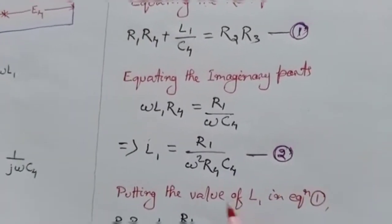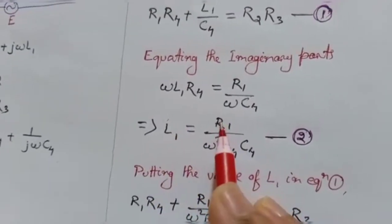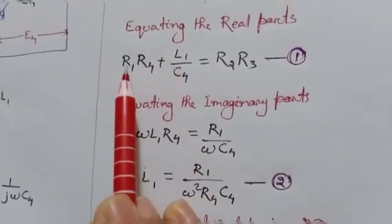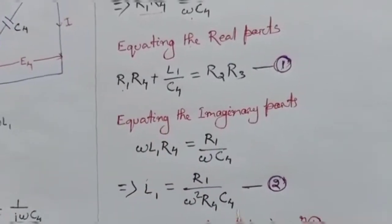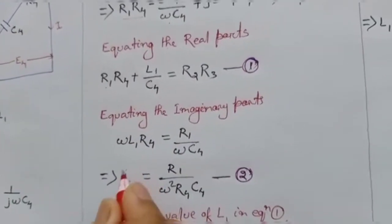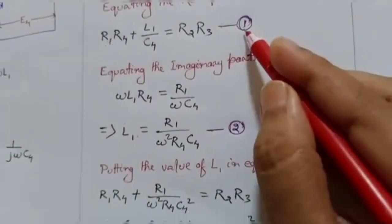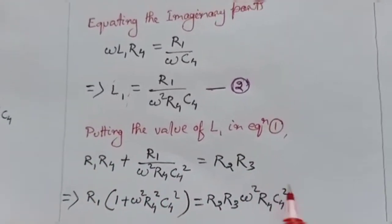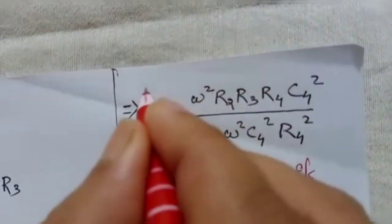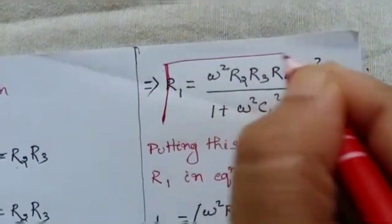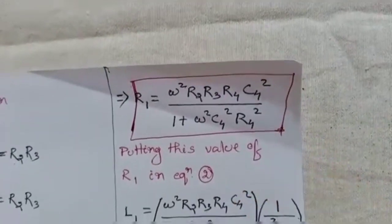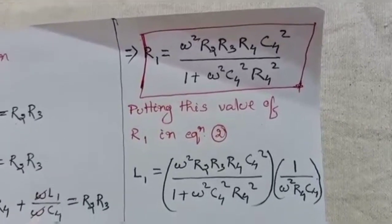Since L1 and R1 both appear as unknowns in equations 1 and 2, we substitute the value of L1 into equation number one and solve. Finally, we get the value of unknown resistance R1: R1 = ω²·R2·R3·R4·C4² / (1 + ω²·C4²·R4²).